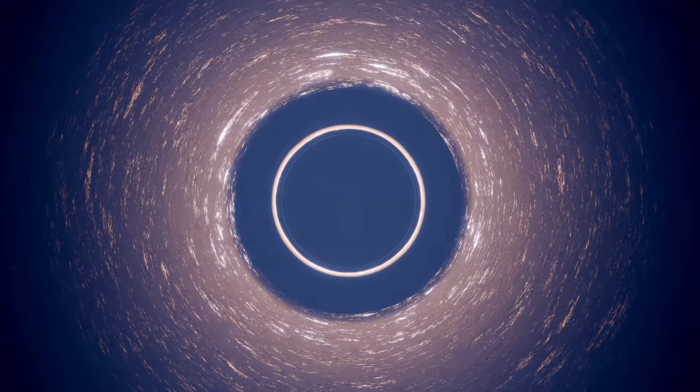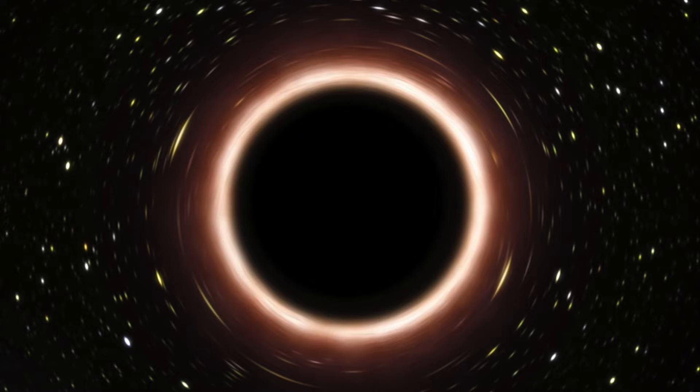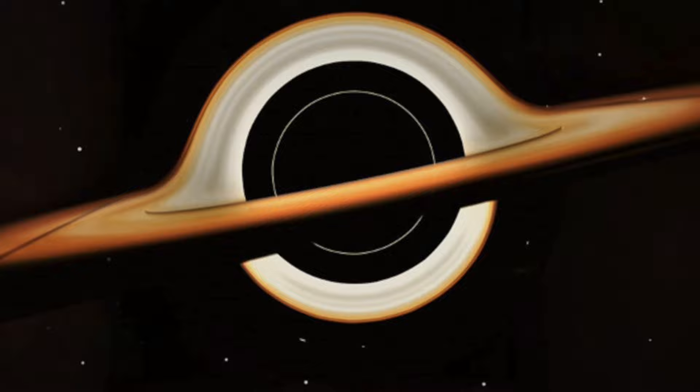Sagittarius A-star exhibits a proper motion of approximately minus 2.70 micro-arcseconds per year for the right ascension and minus 5.6 micro-arcseconds per year for the declination. Interestingly, the measurements of these black holes subjected Einstein's theory of relativity to a rigorous test, and the outcomes matched perfectly.